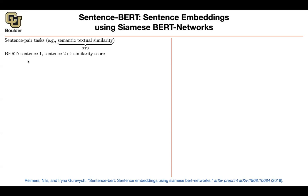You put a small head on top of the classification token, which is going to output a score, taking you from dimension 768 to dimension one using matrix vector multiplication. That's how BERT is going to approach it.